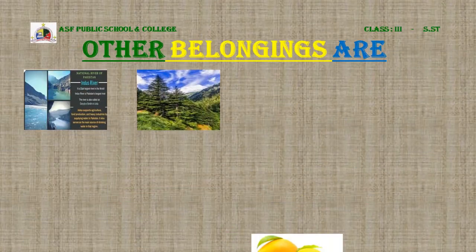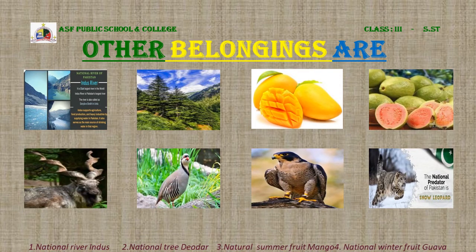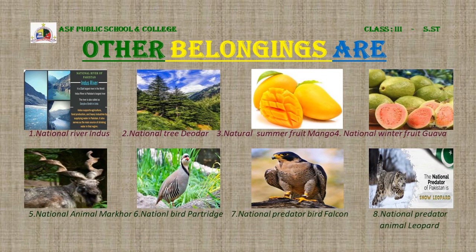Other belongings: Number one, national river — Indus. Number two, national tree — Deodar. Number three, national summer fruit — mango. Number four, national winter fruit — guava. Number five, national animal — markhor, which is found in the northern areas. Number six, national bird — partridge (chakor). Number seven, national predator bird — falcon (baaz). Number eight, national predator animal — leopard.